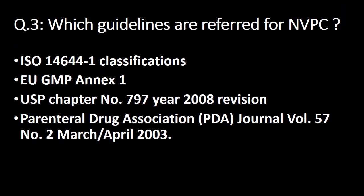Which guidelines are commonly referred to for non-viable particle count? There are four guidelines: first, ISO 14644-1 classification; second, EU GMP Annex 1; third, USP Chapter 797 (2008 revision); and fourth, PDA Parenteral Drug Association Journal Vol. 57, No. 2, March-April 2003.